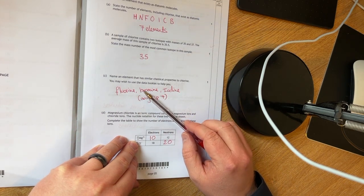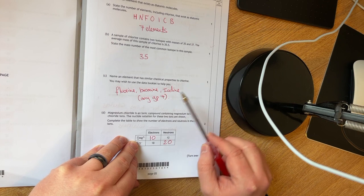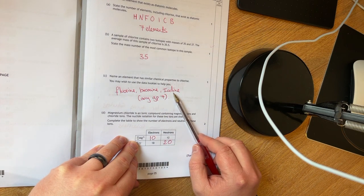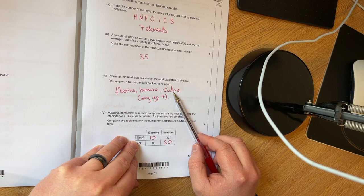Part C. You have to name an element that has similar chemical properties to chlorine. Any in group seven will be fine. So fluorine, bromine and iodine. It could have also said astatine, I think that would be a possibility.